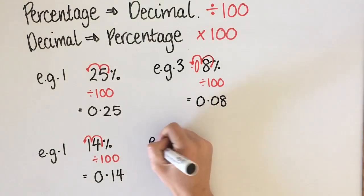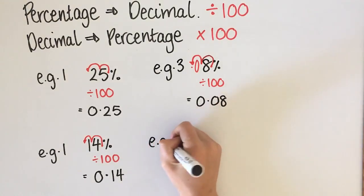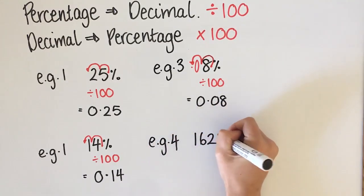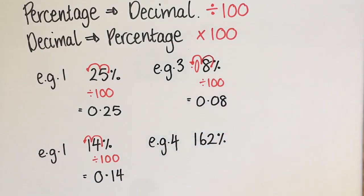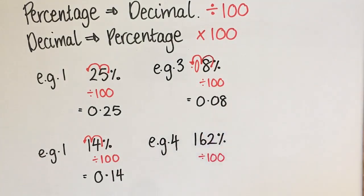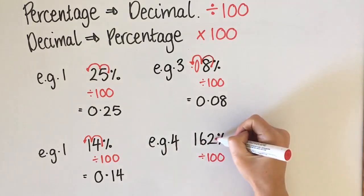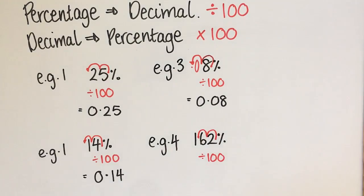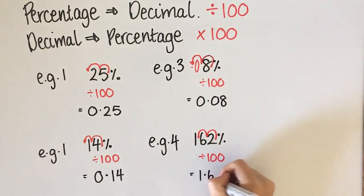We're going to do one more converting this way: 162%. The difference here is that we've got a number over 100%, but that doesn't matter — we still divide by 100, moving the decimal point twice, and I end up with 1.62.